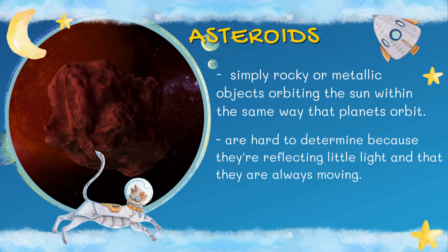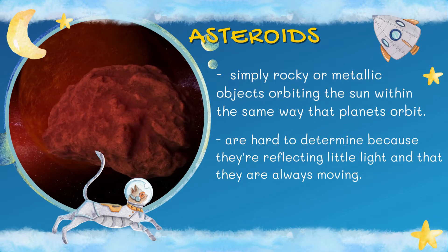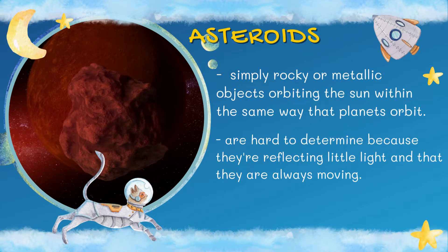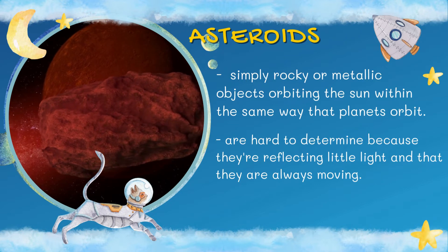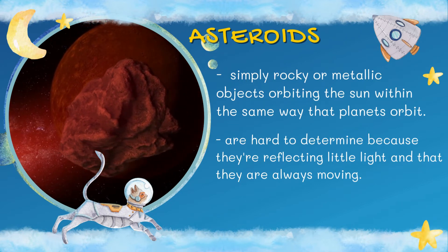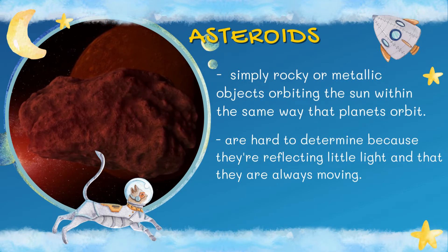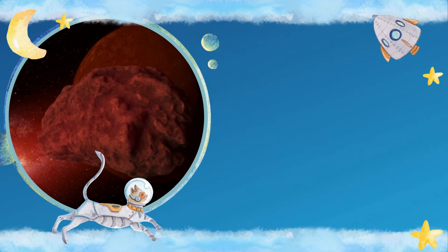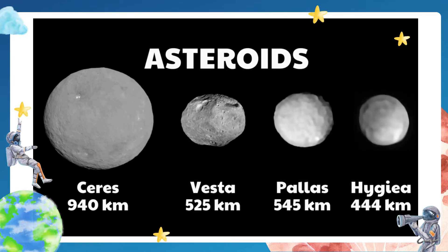Lastly, we have asteroids. Another fascinating object within the solar system are the asteroids. They are simply rocky or metallic objects orbiting the sun in the same way the planets do. However, asteroids are hard to determine because they reflect little light and are always moving. No asteroids have an atmosphere. Asteroids come in all sizes and shapes — some are as tiny as pebbles and a few are as big as mountains. Since they are smaller than planets, they are often called miniature planets or planetoids.